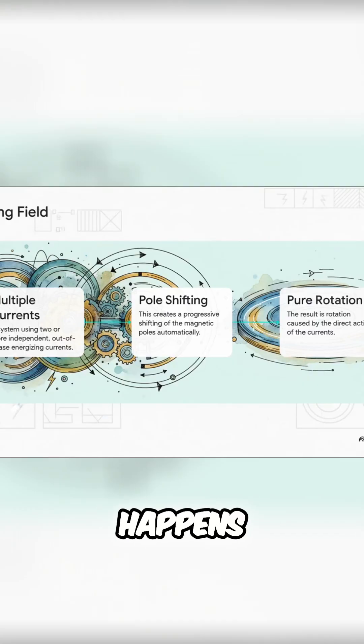Okay, so this is where the magic happens. Instead of one steady push of current, Tesla used two or more, each one pulsing slightly out of sync with the other.